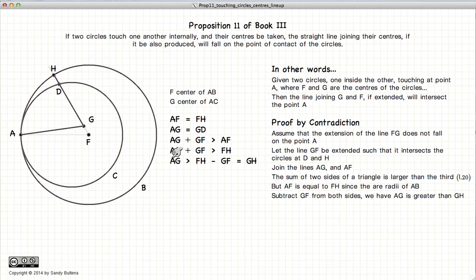Now AG is equal to GD because they are the radii of the inner circle or the smaller circle. So we have GD is greater than GH.